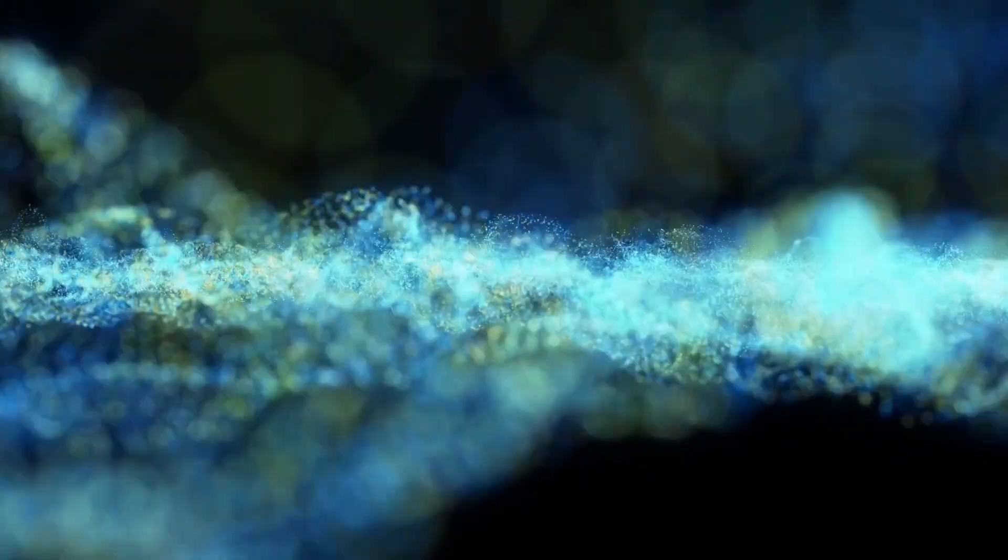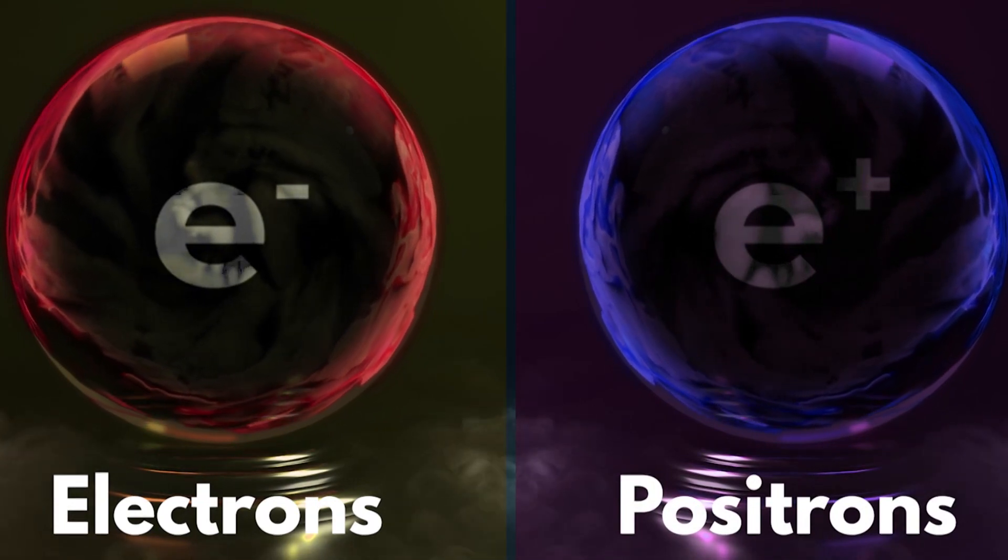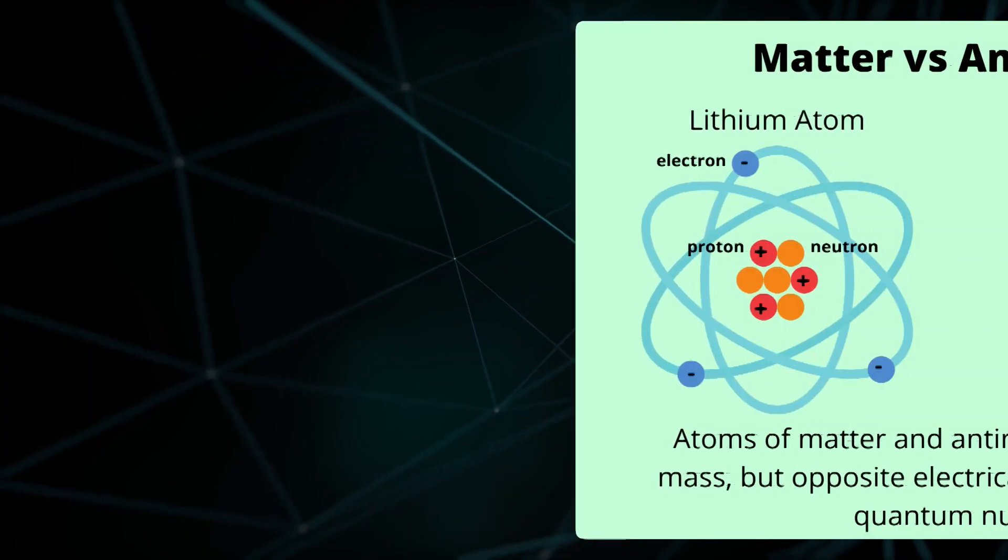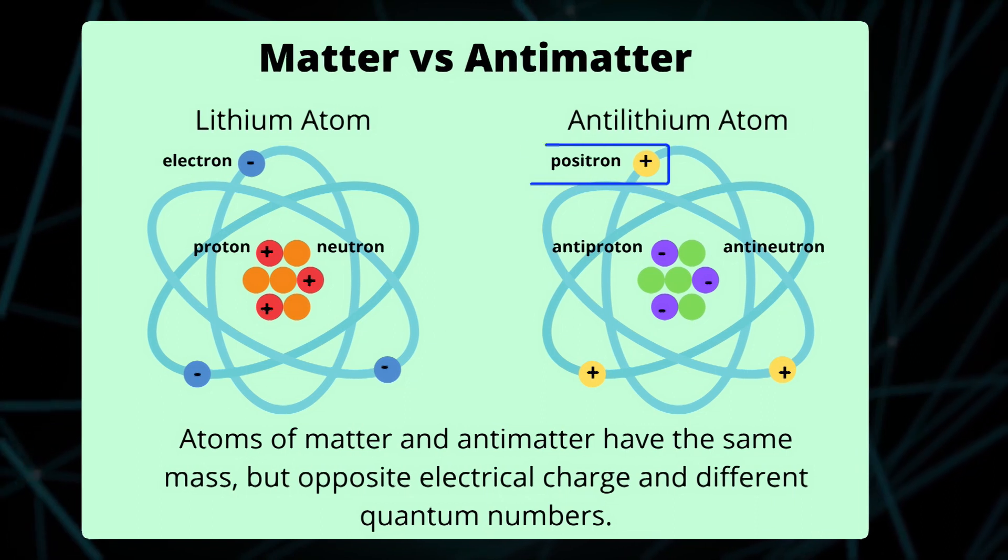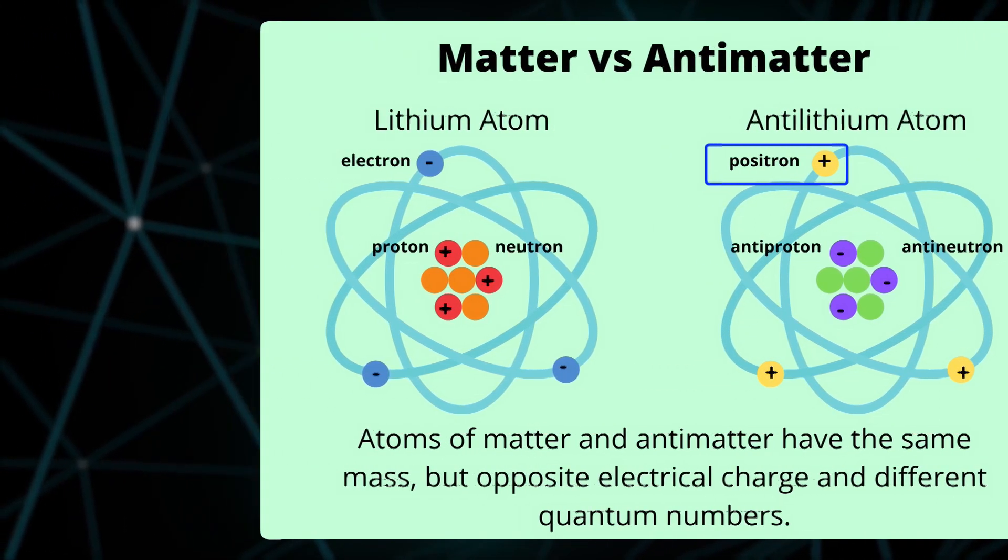It's composed of antiparticles that have the same mass as particles of ordinary matter but opposite charge and characteristics. For instance, an electron in regular matter has a negative charge, but its antimatter counterpart, the positron, carries a positive charge.